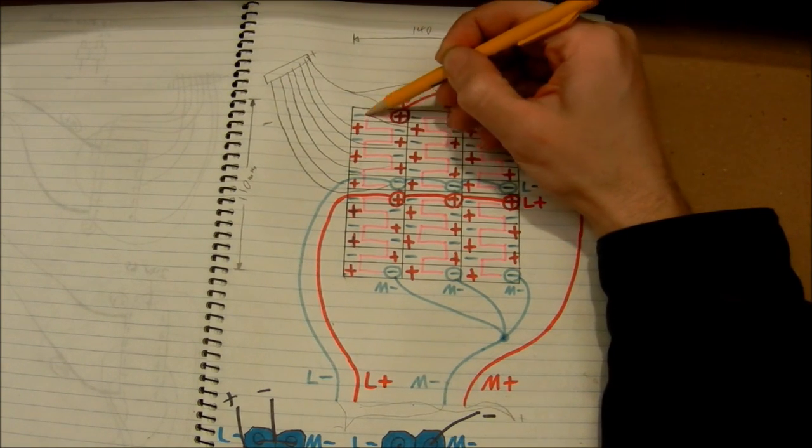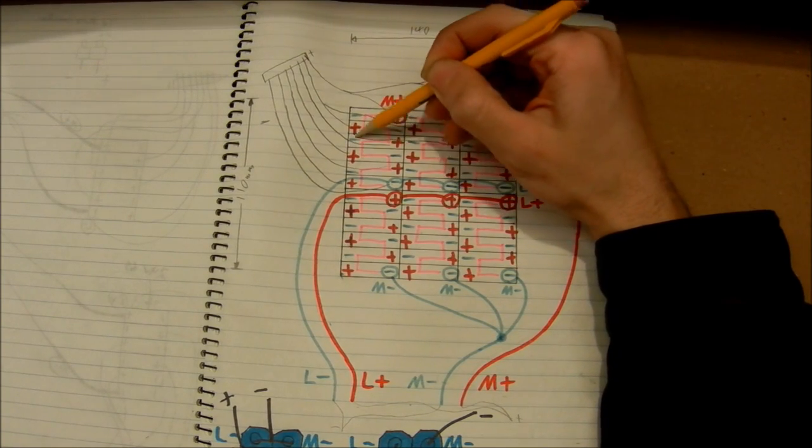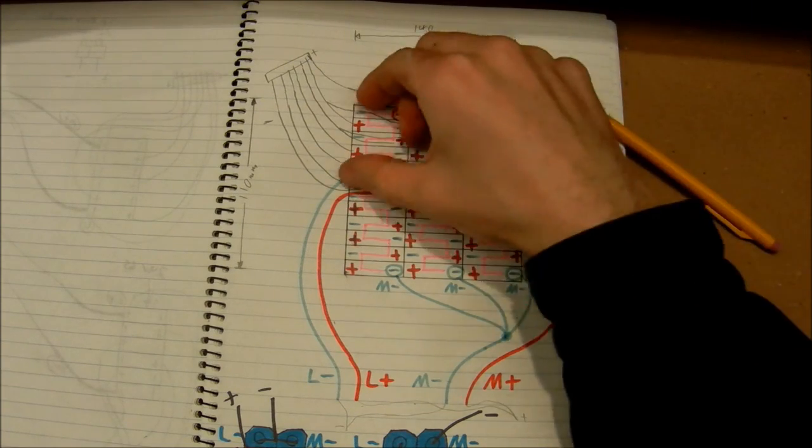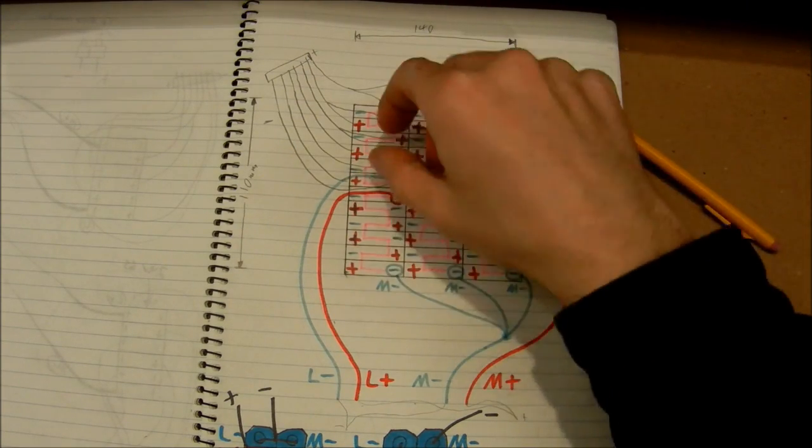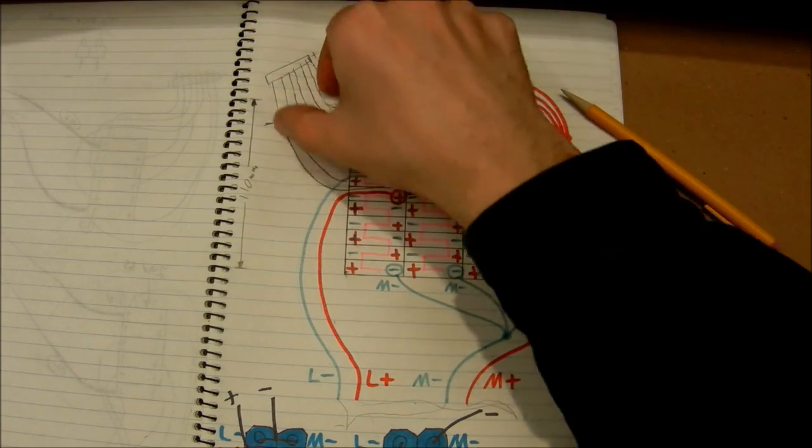So this positive will go into there, this positive will go into the next one, and this is getting really messy, but you get the idea. Every cell has the same seven connections, and it all goes into the same connector.